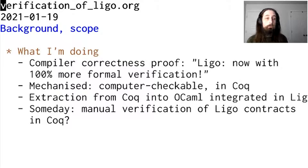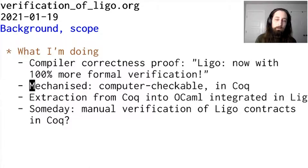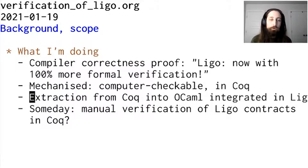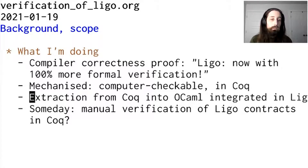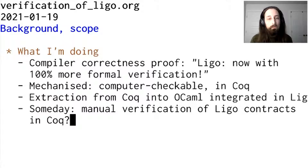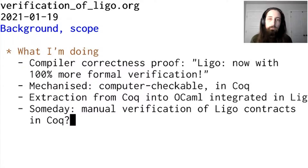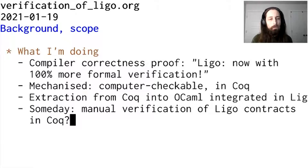My current goal is to prove all of that correct — a mechanized, computer-checkable proof in Coq. Moreover, I want to extract the compiler from Coq and integrate it with OCaml, and in Coq we'll have some statement of correctness. Someday, though not yet, I'll also be interested in manually verifying LIGO contracts in Coq — presumably allowing you to put concrete syntax into the LIGO executable and spit out an intermediate representation you can work with in Coq.